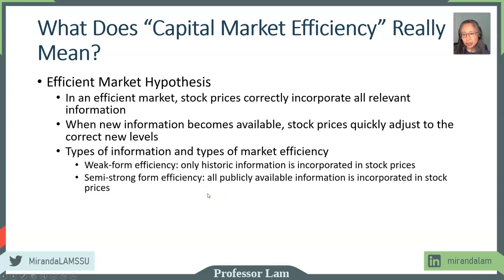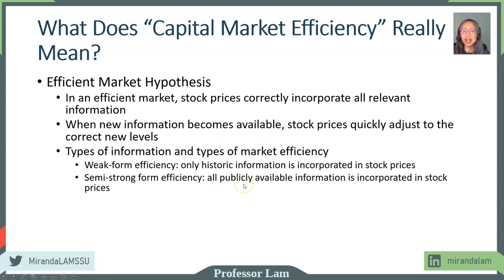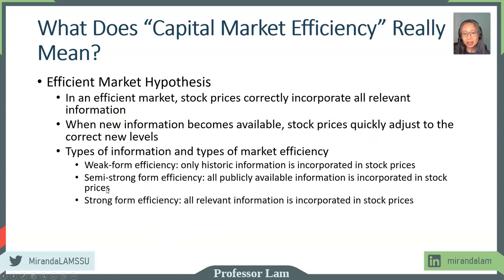A semi-strong form efficiency includes all publicly available information. So of course, by the time information becomes public, it instantly becomes history. This is what we mean by this quick adjustment — as soon as an announcement is made and it becomes public, stock price will react quickly and correctly. A strong form efficiency is that all relevant information, whether or not it has been publicly announced, is incorporated into the stock price.